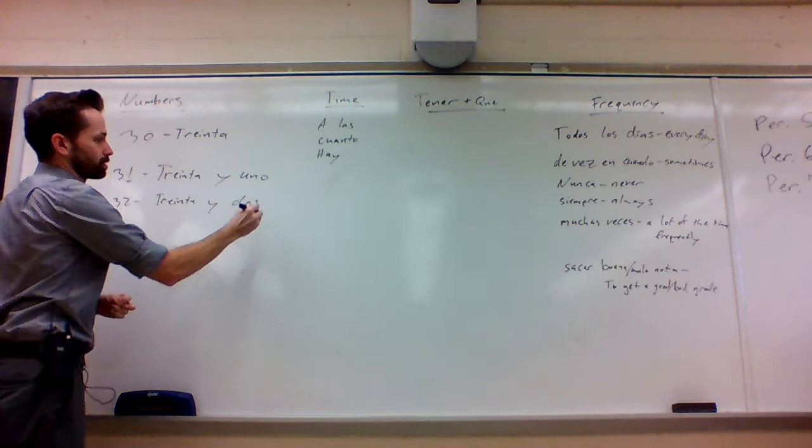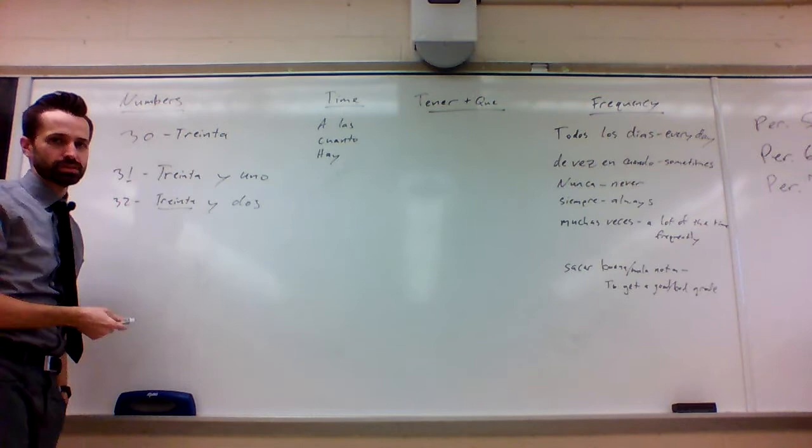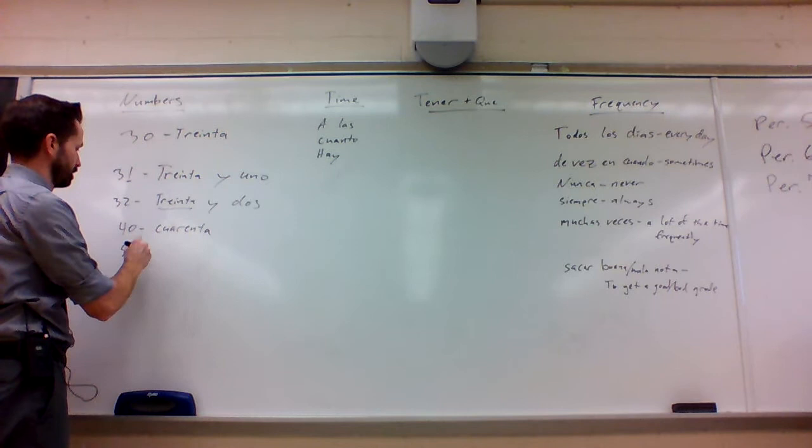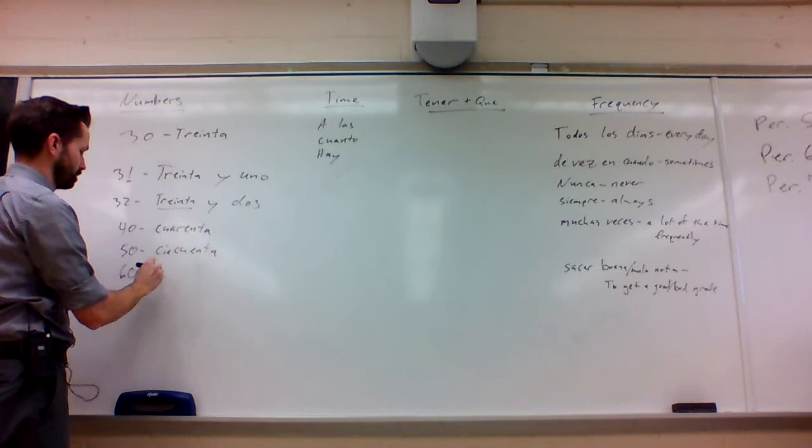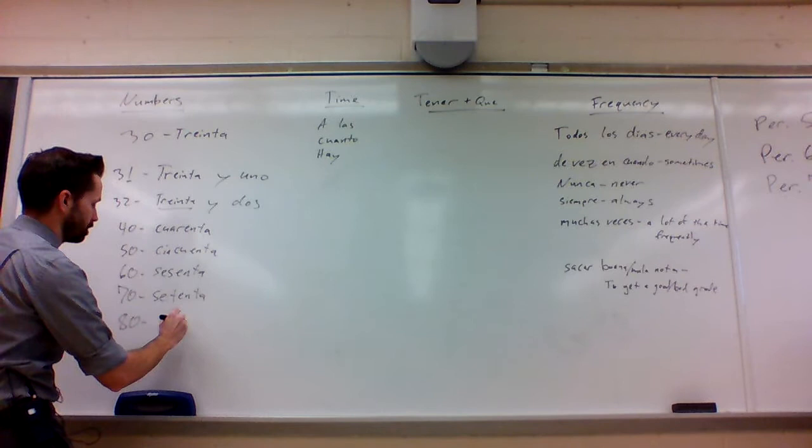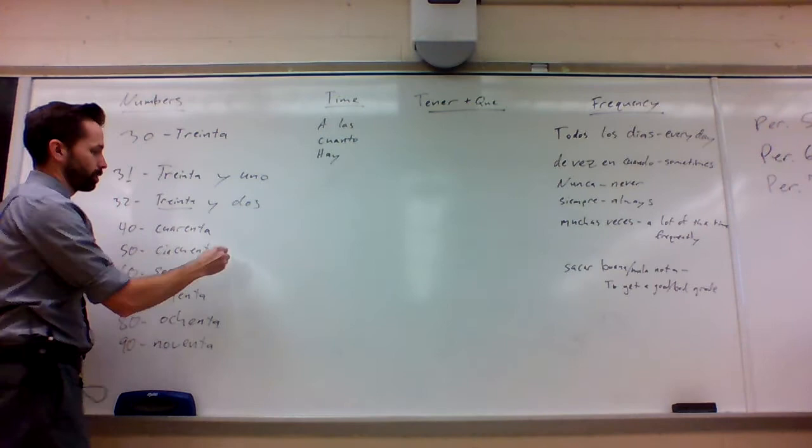So if you wanted 32, it would be treinta y dos, 30 and two. Treinta y tres, treinta y cuatro, all the way on up. So in order to do from 30 all the way up to 99, you just need to know the numbers for the tens digits. So that's treinta (30), cuarenta (40), cincuenta (50), sesenta (60), setenta (70), ochenta (80), noventa (90).